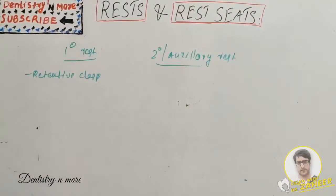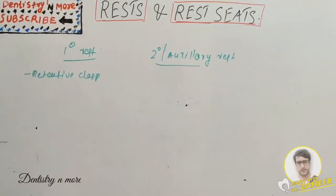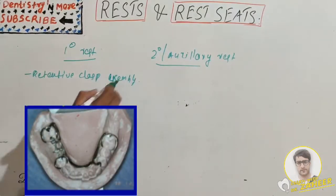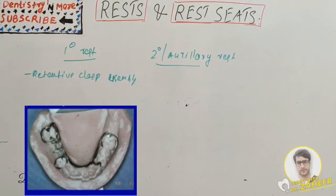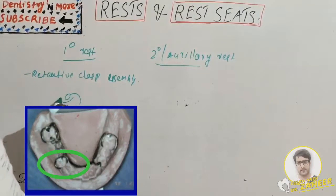A primary rest is a rest that is part of a retentive clasp assembly. It prevents vertical movement of the denture toward the tissues and also helps transmit applied forces to the supporting teeth. It should be shallow and saucer-shaped, functioning as a ball and socket joint.